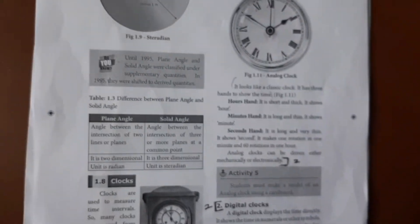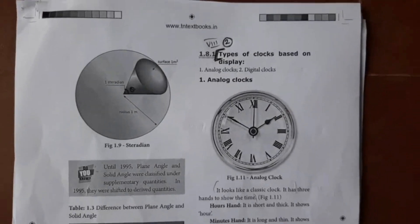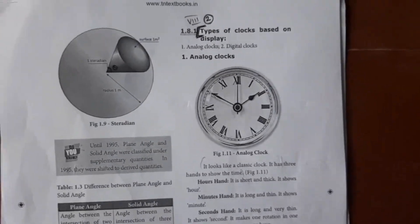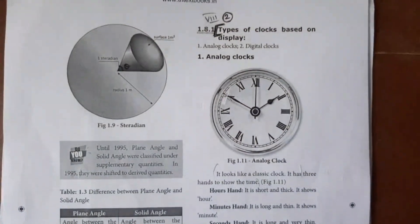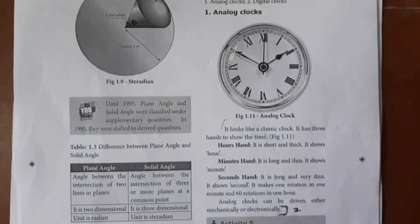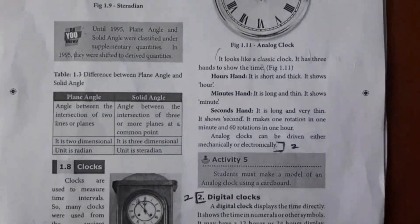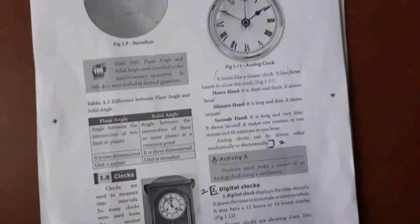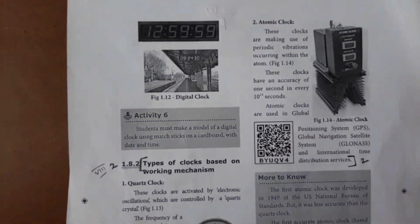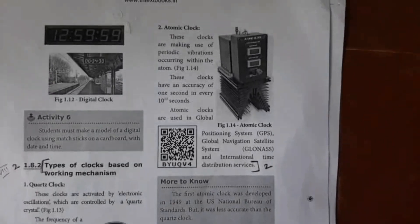Types of clocks based on display — digital clocks. Mark two questions answer: types of clocks. Answer: accuracy definition. What is error — definition and example.